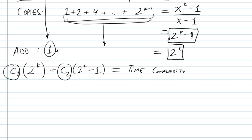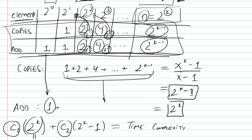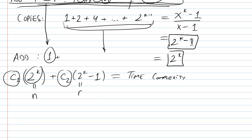Now, 2 to the k is actually the number of elements that we have. So let's just replace that with n, and we see that it's c1*n plus c2*n minus 1.